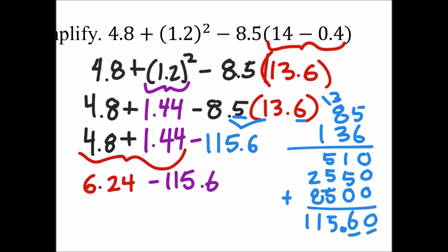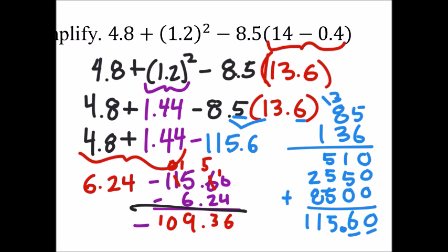So since we're subtracting a number that's bigger, we can take the 115 and really subtract a 6.24 and just know that this is negative. We'll borrow here. Negative 109.36. That looks to be our answer. Thank you.